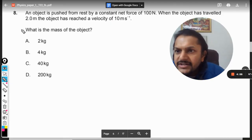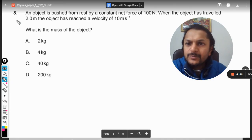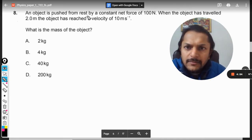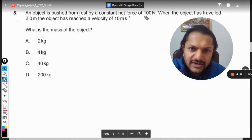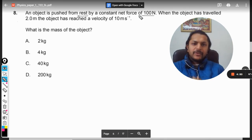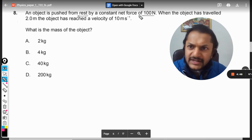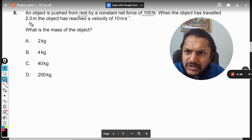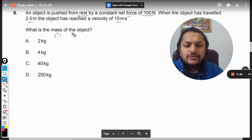Okay dear students, let us see what is there in this question. An object is pushed from rest by a constant force of 100 Newton. When the object has traveled 2 meters, the object has reached the velocity of 10 m/s. What is the mass of the object?